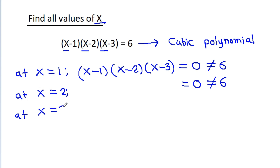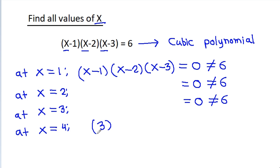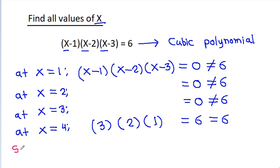At x equal to 3, (x-3) will be 0, so it is 0, which is not equal to 6. At x equal to 4, (4-1) will be 3, times (4-2) will be 2, times (4-3) will be 1, that is 6. So x equal to 4 will be a solution.